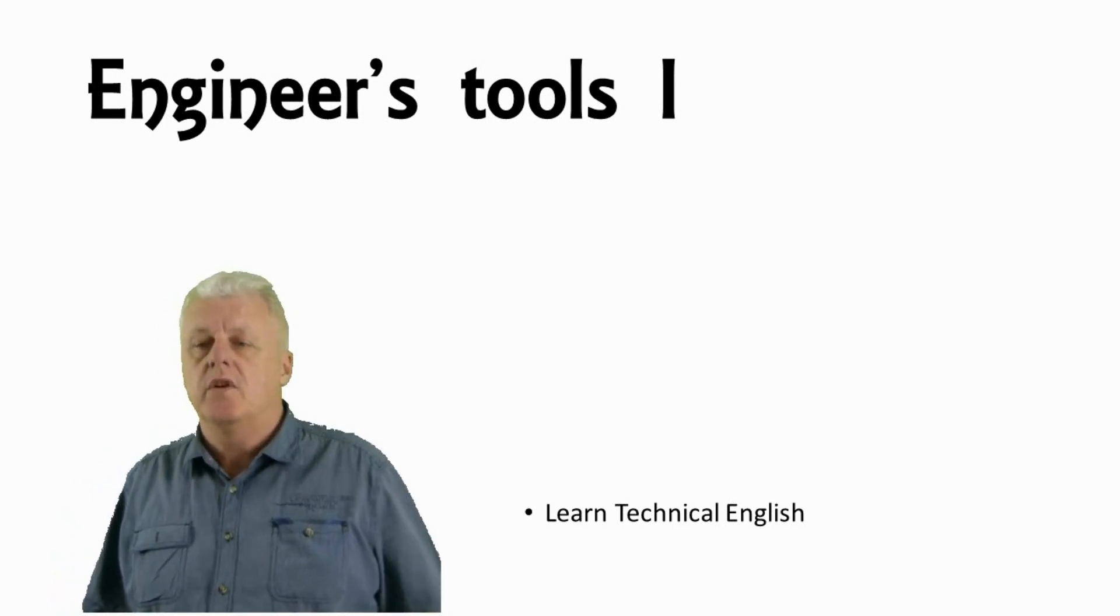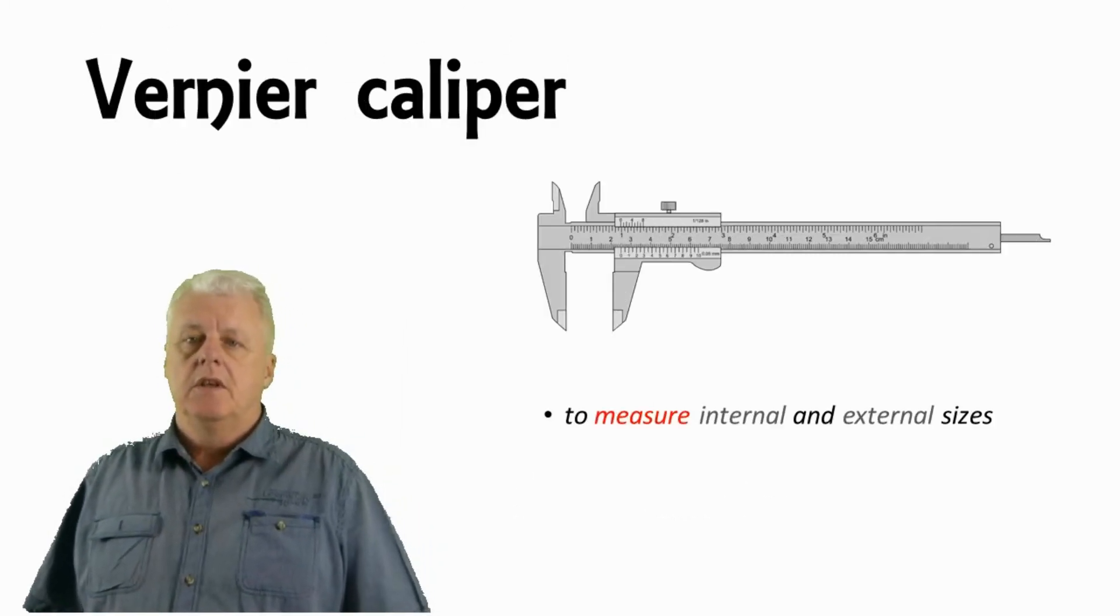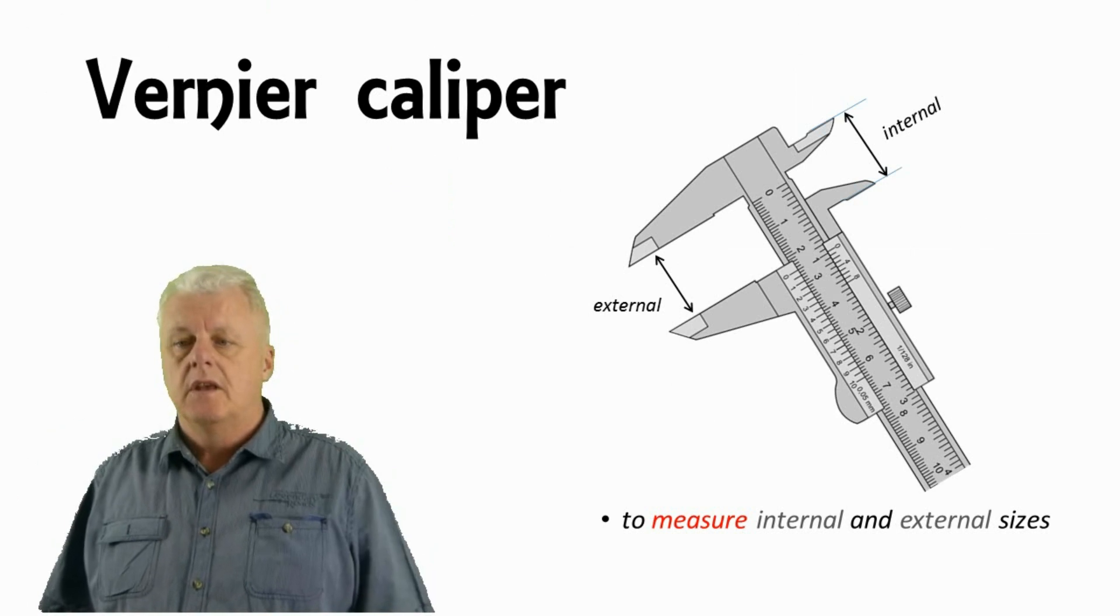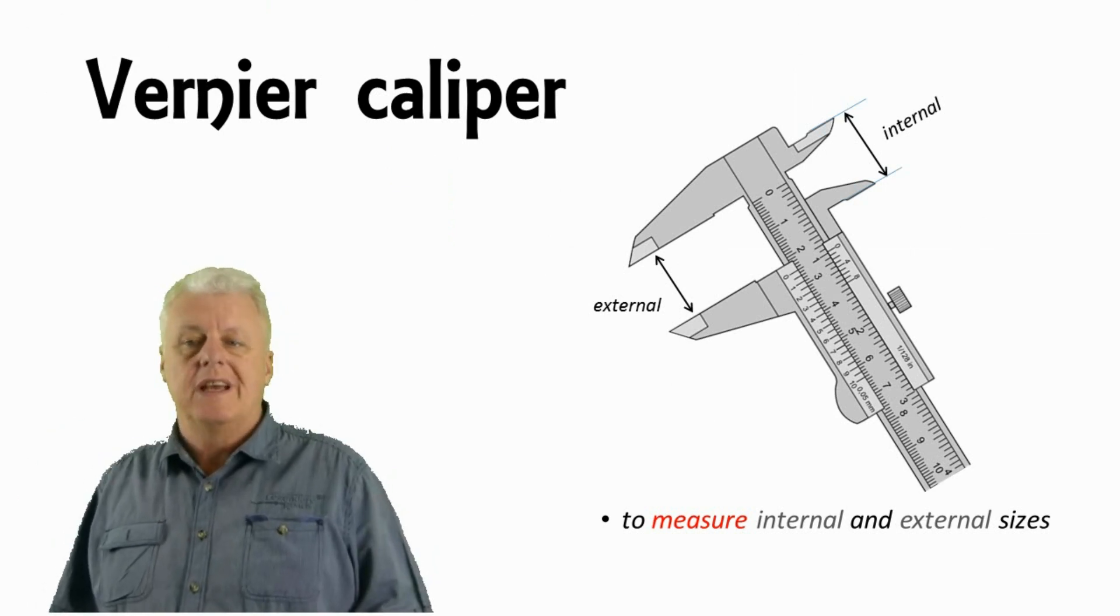So the first tool is a vernier caliper and the vernier caliper is to measure internal and external sizes and here you can see the internal and external calipers.